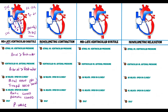Next is isovolumetric contraction. 'Iso' means the same, so the volume inside the ventricles doesn't change — no blood is entering and no blood is leaving. The ventricles, which were at zero mmHg, start contracting as myocytes depolarize, increasing pressure. The right ventricle pressure rises to about 4 mmHg and the left ventricle rises to about 25 mmHg.